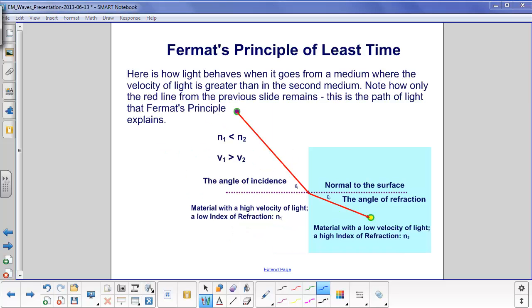What's very interesting is that light behaves exactly like the person trying to get from the beach to the boat in the water. This light blue area represents water. This path here is the path of least time, just like we showed for the swimmer. In this case, the index of refraction here is less than the index of refraction here, so this could be air and this could be glass.